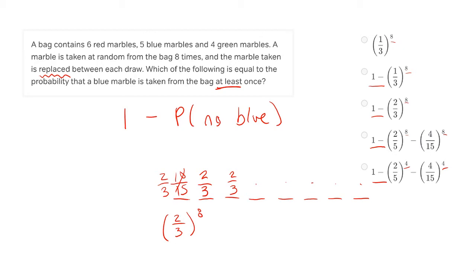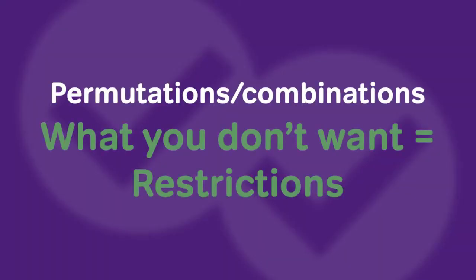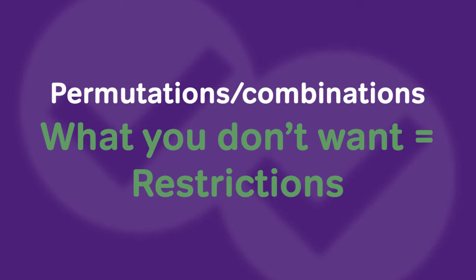We have to remember to subtract from one to go from what we don't want to what we do want. So one minus two-thirds to the eighth is answer choice C. This is obviously a powerful tool for probability, and if you stopped the video right here you would have learned something very valuable. But what makes this strategy so cool is that it also has amazing applications for permutations and combinations questions where there are difficult restrictions.